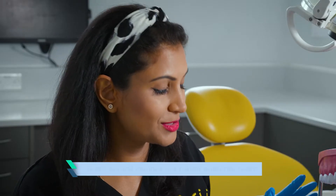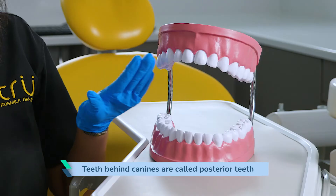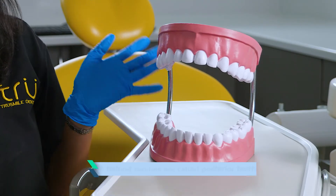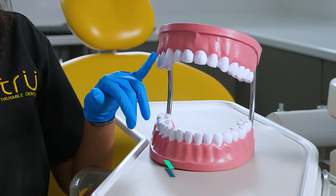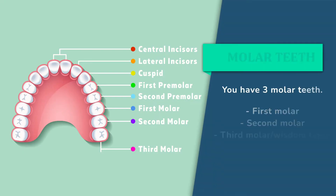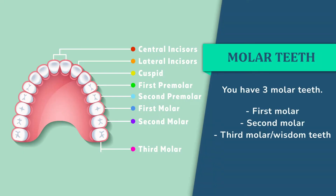The teeth behind your canines are called your posterior teeth. Behind your canines, you've got your bicuspids and your cuspids — so your premolar teeth. There are two premolar teeth and three molar teeth: the first, second, and third molar. The third molar, not everyone may have — it's also known as your wisdom tooth.